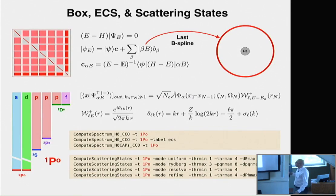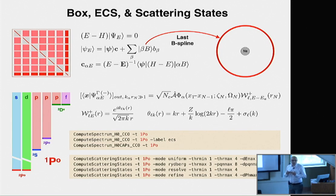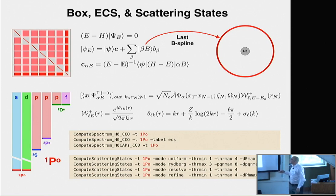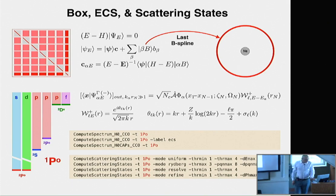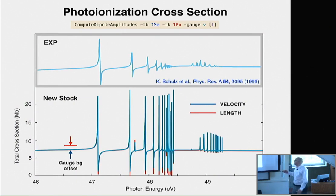Then you need to solve the spectral problem in each symmetry. With this close coupling B-spline approach, computing bound states, exterior complex scaling states, or scattering states prescribed by boundary conditions is almost trivial — it is very robust, and in fact it takes more time to write the scattering states to disk than it takes to compute them. It is pretty easy for students to compute all these spectral solutions: they just specify the symmetry and the kind of calculation they want, and they get thousands of states needed in the simulation. With a single command line, they can also compute perturbative photoionization spectra.